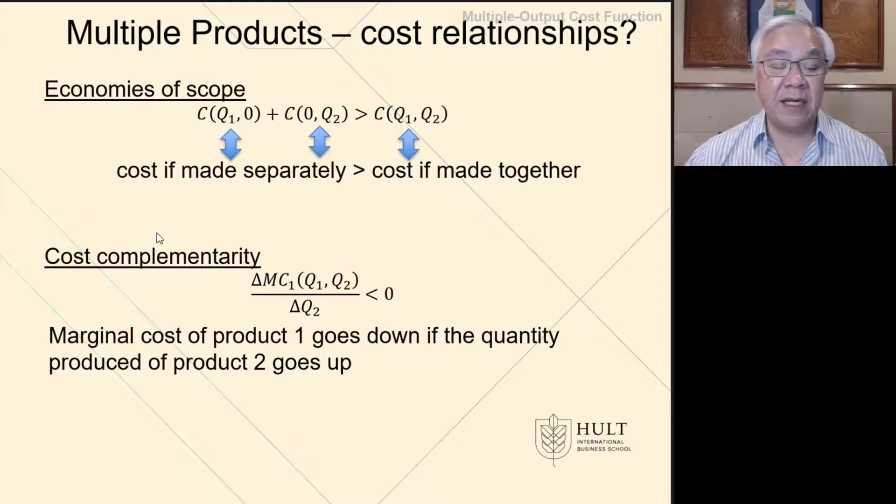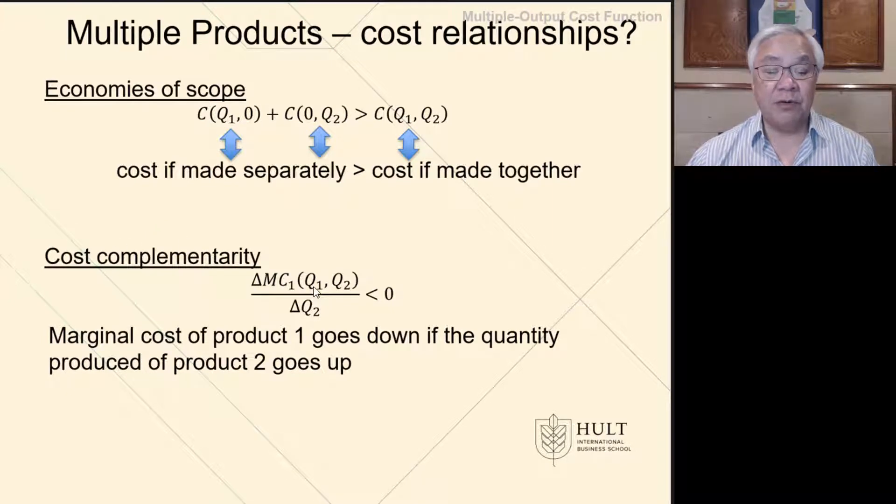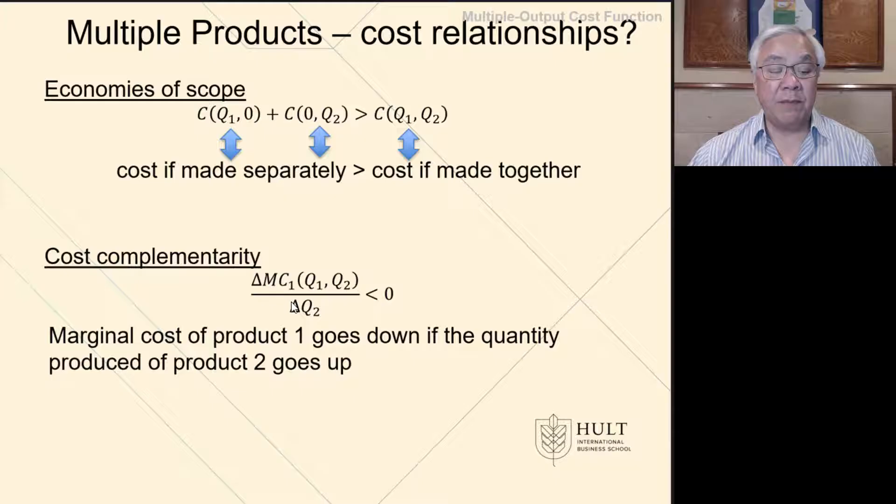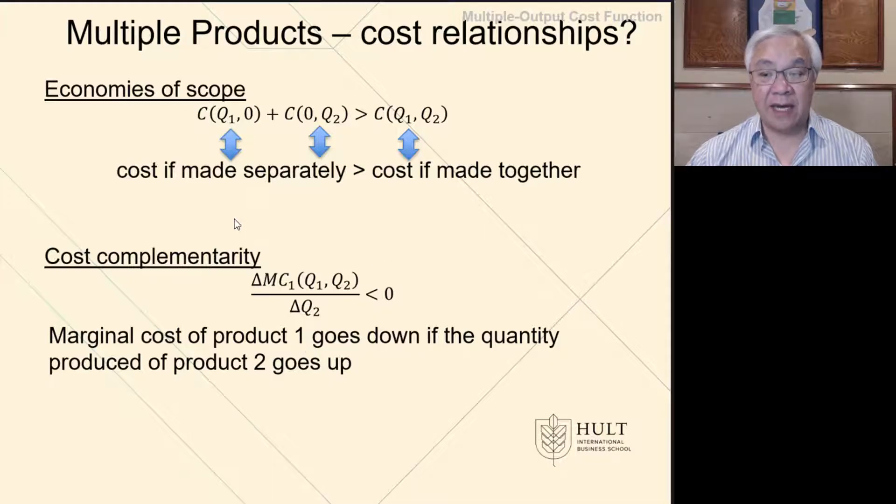Cost complementarity is where the marginal cost of making Q1 and Q2, when we change Q2, is less than zero. In other words, when the marginal cost of product 1 will go down if the quantity produced of 2 goes up. So we're seeing that relationship where cost of 1 is driven down by increases in quantity of 2.